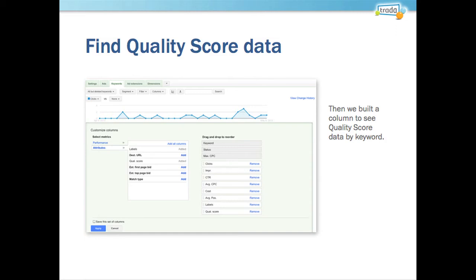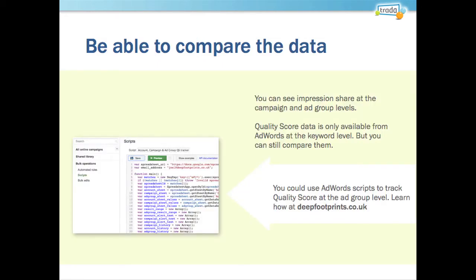Brad was likely referencing a script-based way to pull out all the data, get it into Excel, and create a pivot table. Writing scripts to pull data out of AdWords is fairly advanced. We found a really smart way to write an AdWords script at deepfootprints.co.uk, which allows you to track quality score at all the different levels that Google doesn't automatically provide. We'll show a more manual approach to look at ad groups that are missing impressions and examine the keywords inside.